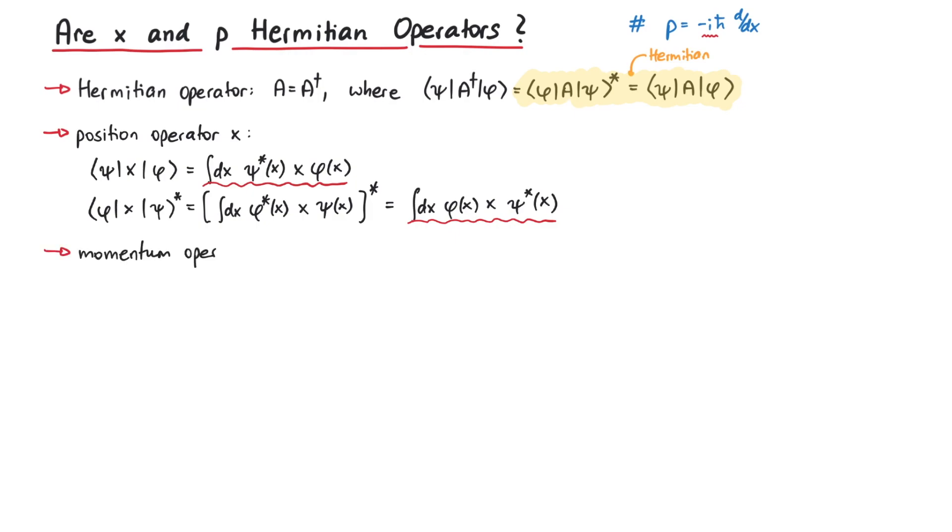What about the momentum operator? In the position space representation, p can be expressed as minus i h-bar d over dx. Let's find out if this i causes any problems.